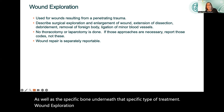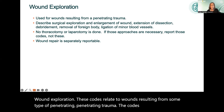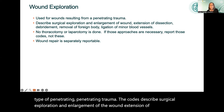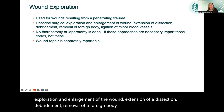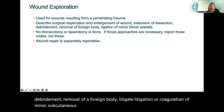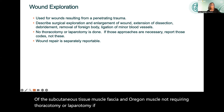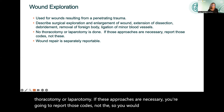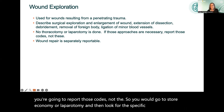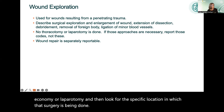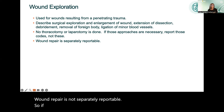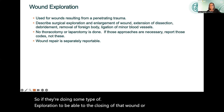Wound exploration codes relate to wounds resulting from penetrating trauma. These codes describe surgical exploration and enlargement of the wound, extension of a dissection, debridement, removal of a foreign body, ligation, or coagulation of minor subcutaneous and/or muscular blood vessels of the subcutaneous tissue, muscle fascia, and/or muscle — not requiring thoracotomy or laparotomy. If those approaches are necessary, report those specific codes instead. Wound repair is not separately reportable; closing the wound is included in the exploration.